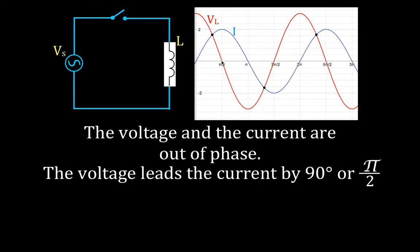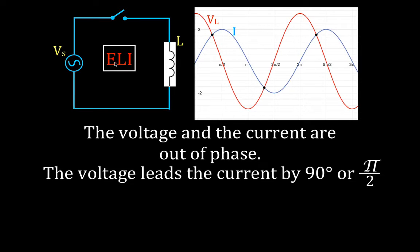We have a simple device to remember that: ELI. E is for the EMF, or the voltage. L tells us we're using this for inductive circuits, and I is the current. Using ELI for inductive circuits, you can see that the voltage leads the current — the peak voltage always occurs before the peak current, E before I, for an inductive circuit.